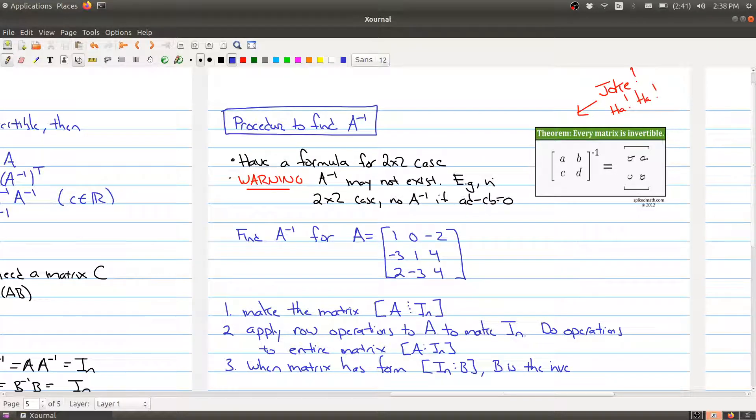Hi, welcome back to the third part of today's lecture. As promised, we can give a procedure to find the inverse of any n-by-n matrix. So far we have a formula for the 2x2 case, but I want to caution you or give you a warning before we start: there are matrices where you may not be able to find the inverse, and I'll explain what you'll notice when you can't find the inverse. For example, in the 2x2 case, no inverse if the AD minus CB, which is the determinant, is equal to zero.